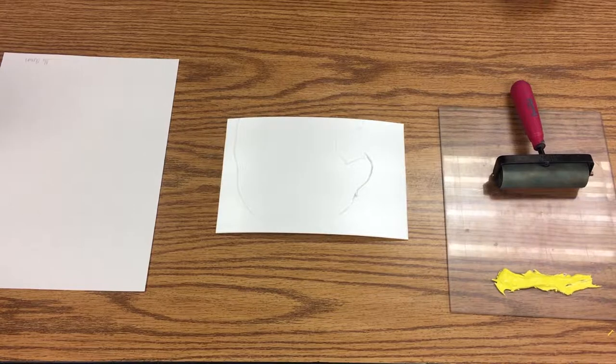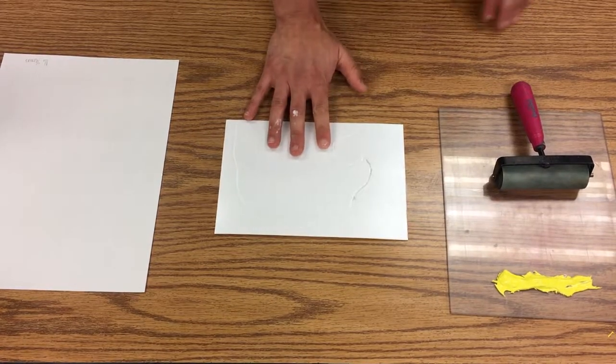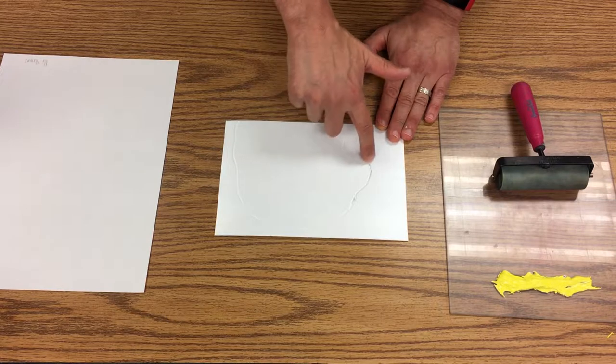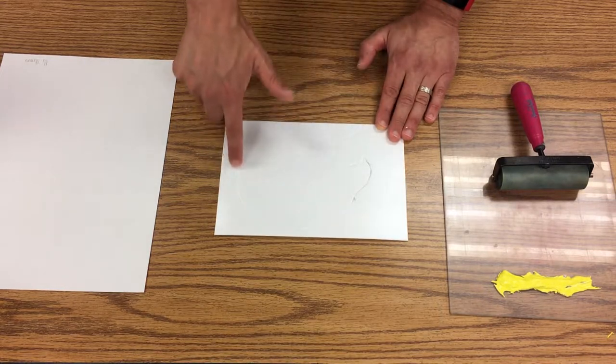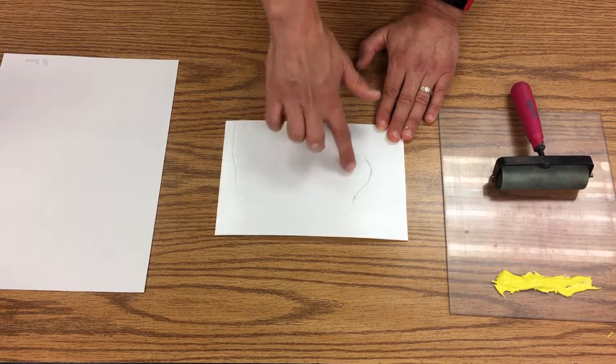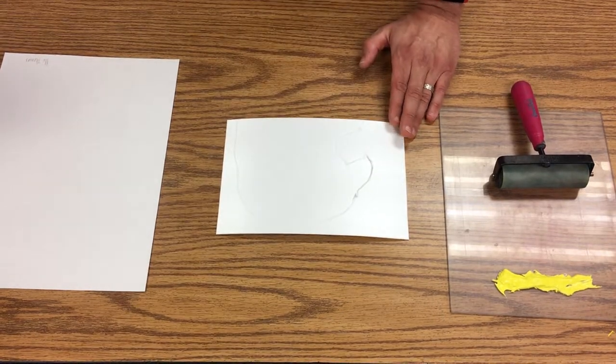I'm going to do my first layer for my reduction print. This is with styrofoam, and what I've done is I've just added that outline on styrofoam. Later when we print again, I will add in more details.